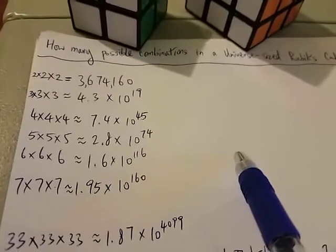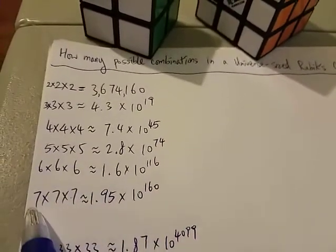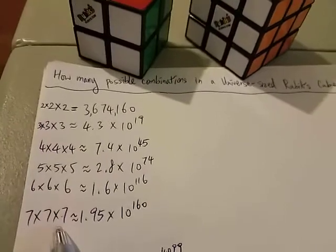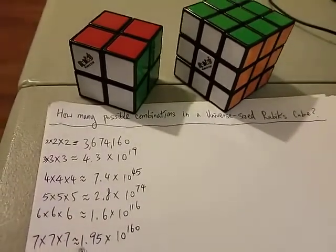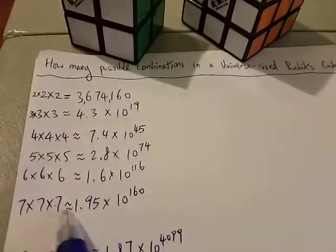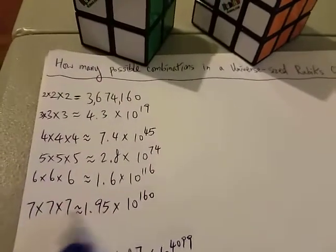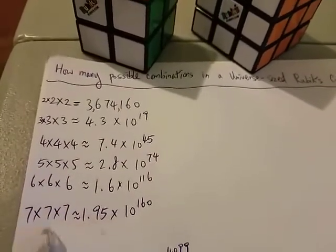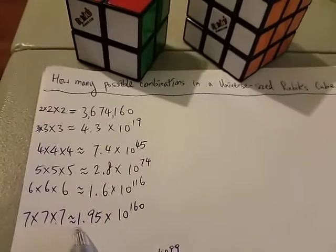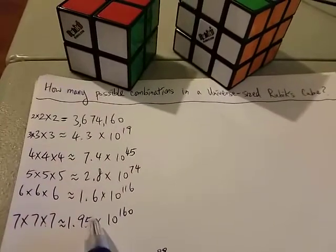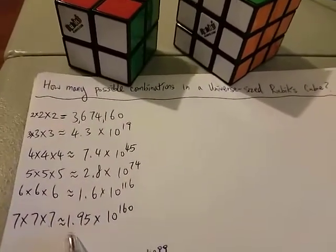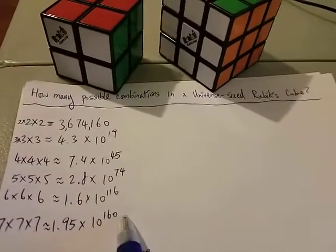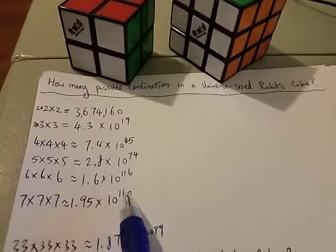Which sounds crazy. And the biggest commercially available Rubik's Cube in the competition is a 7x7x7. A 7x7x7 has a total number of combinations of around 1.95 times 10 to 160, which is mind-blowing.